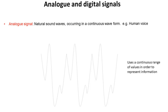So what is an analogue signal? Well it's natural sound waves. It's what you hear when someone's speaking to you and they occur in a continuous waveform — for example, the human voice. There's a continuous range of values that represent information which our ears pick up.